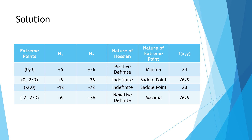This is how you find the nature of the extreme point. If the Hessian matrix were of 3×3 order, you would have a column for h3 as well and three principal minor matrices. This is how you solve a multivariable optimization problem by the classical method.